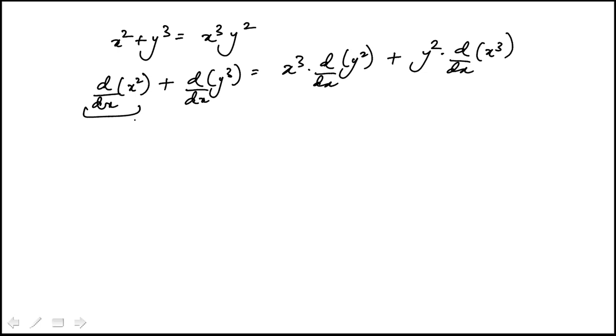So I'm going to write this. So this is 2x, and that would be 3y squared times dy over dx. And that becomes 2y times dy over dx. And then this is y squared times 3x squared.